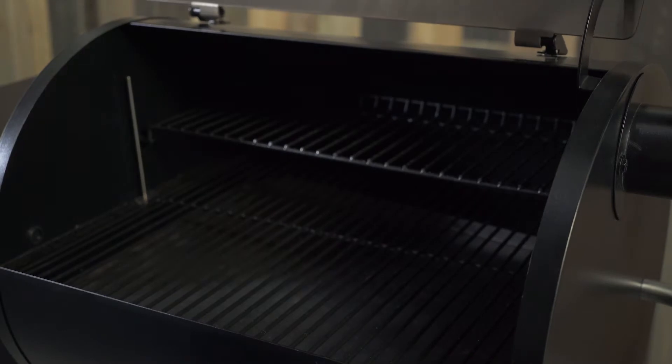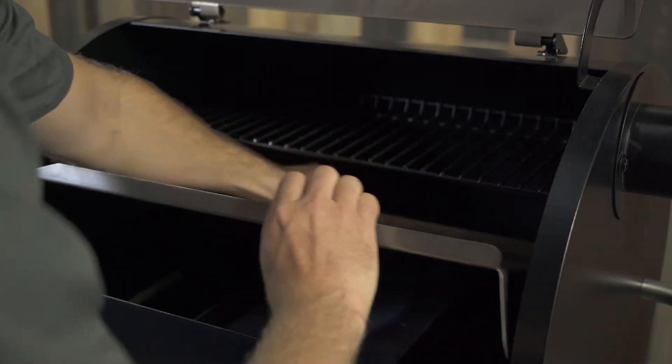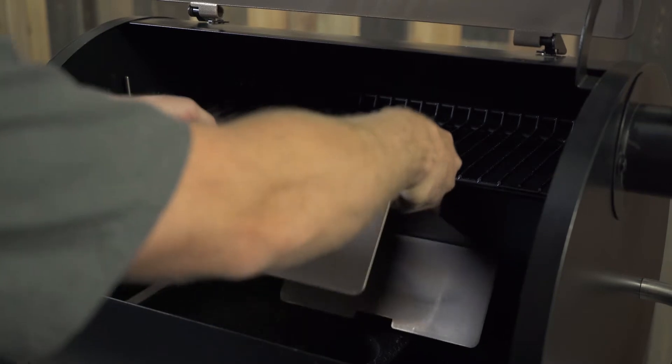Next, open up your grill. Remove the grill grate, the drip tray, and the heat baffles so your fire pot is exposed.